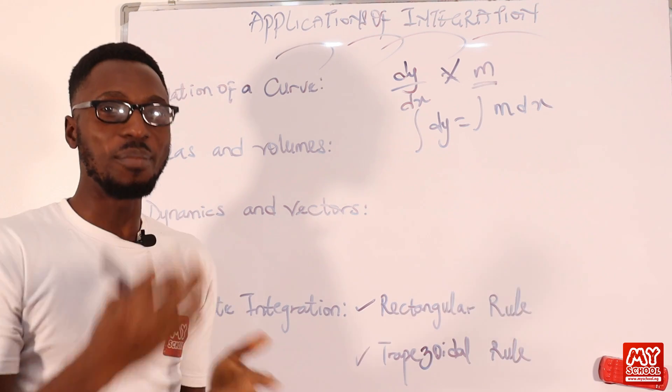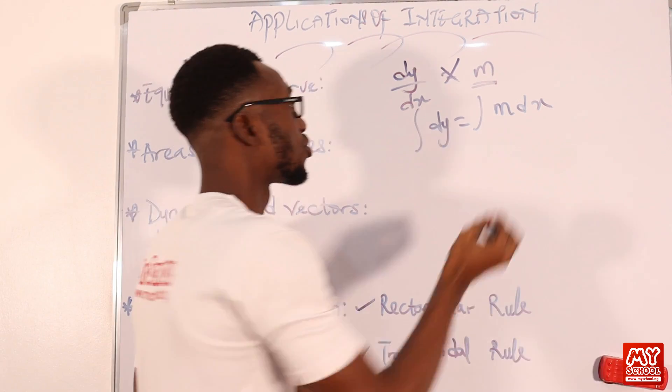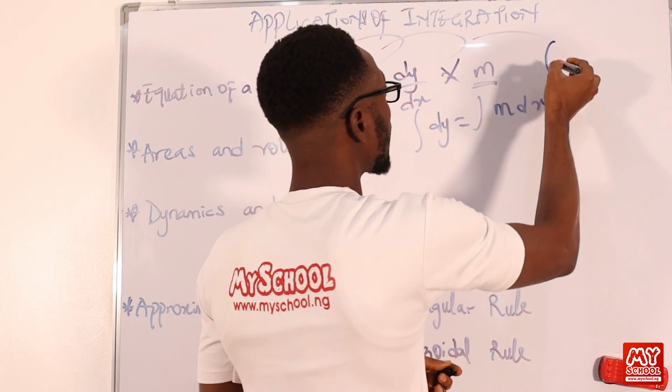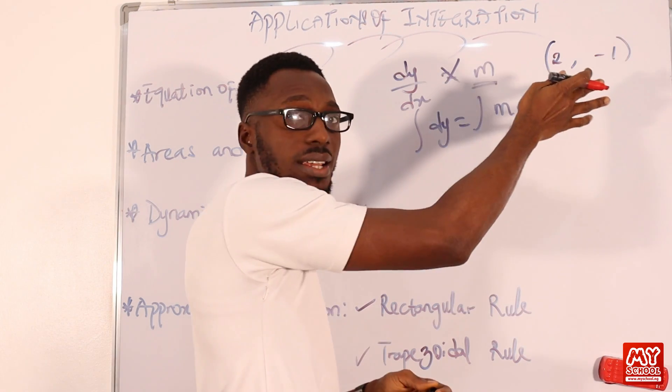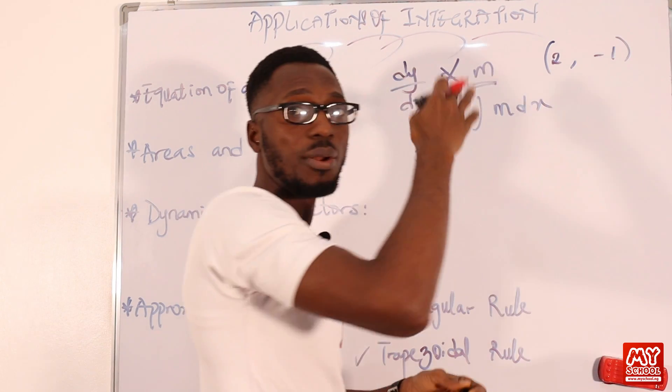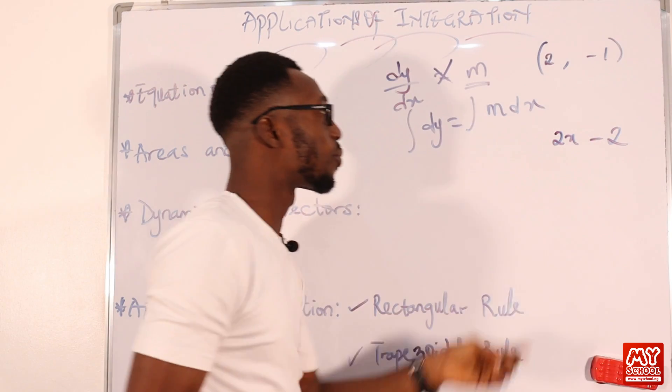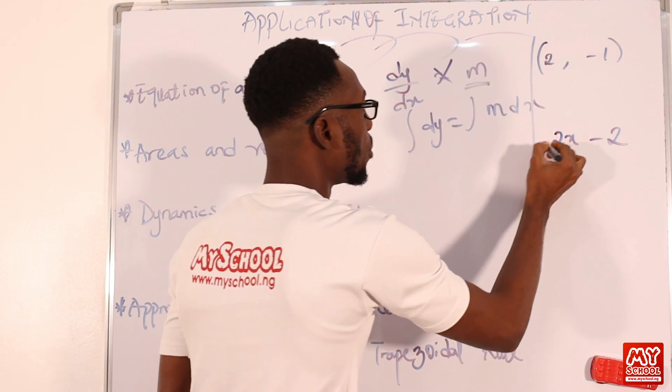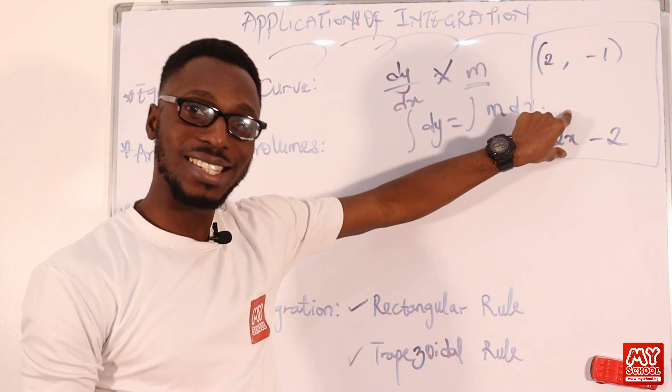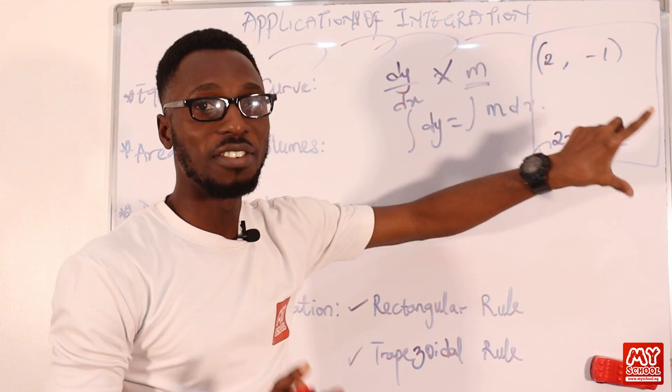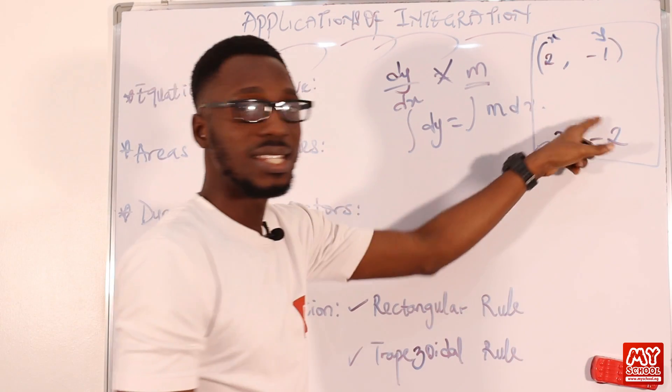Basically, how do you do this? Just the same way you've carried out your integration. At first, you'll be given two points, at least for a typical question, the point where the equation or the curve passes through. Probably we have (2, -1). And you are given the function, probably the function is 2x minus 2. So what are you going to do with this information provided?